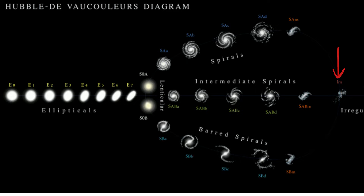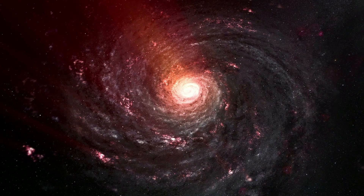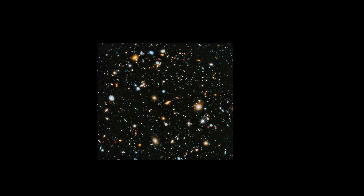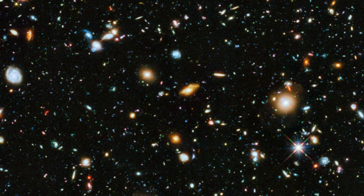Galaxies are huge and range in size from dwarfs with just a few hundred million stars to giants with 100 trillion stars, each orbiting its galaxy's center of mass. It is estimated that there are over one billion galaxies. If you take a look at this picture from the Hubble telescope, each of these small dots is a galaxy.